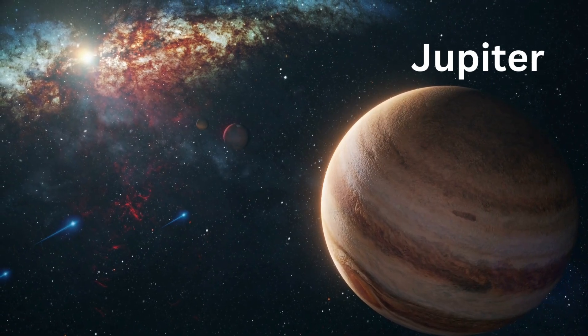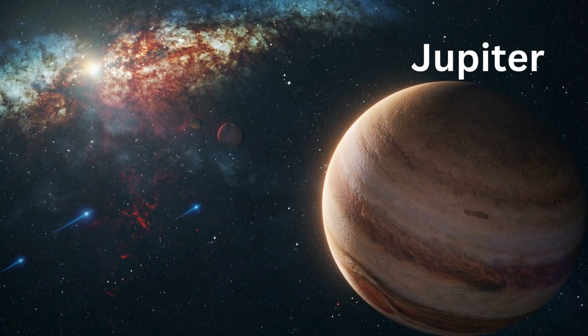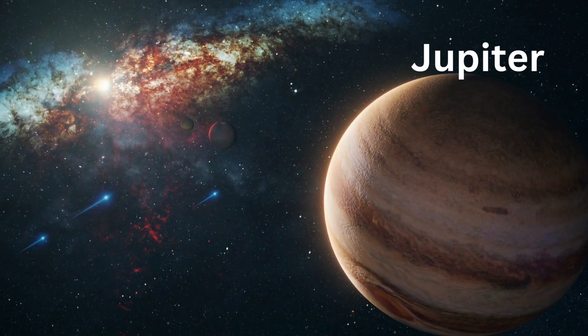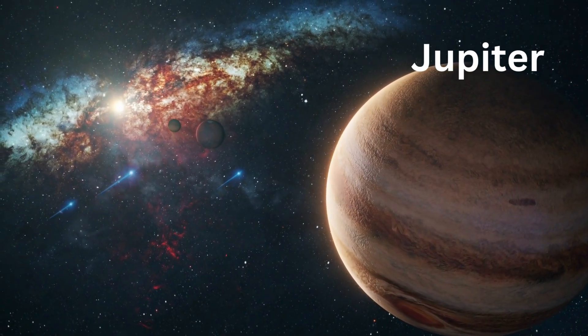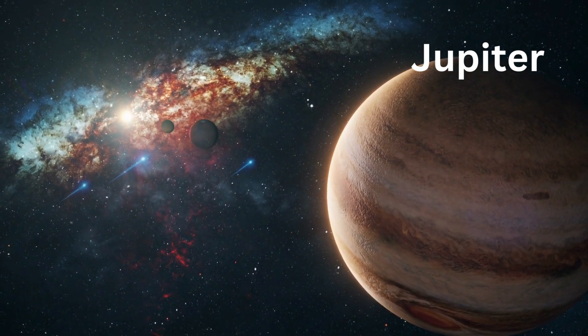Check out Jupiter, the biggest planet. It has a giant storm called the Great Red Spot. It's been swirling around for more than 350 years.